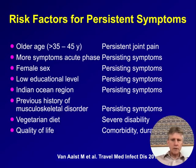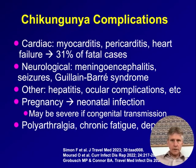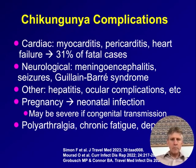Complications are rare but include myocarditis and pericarditis — less than approximately 0.2%, but potentially fatal. Meningoencephalitis and Guillain-Barré syndrome are also rare complications, along with other less common manifestations. Mother-to-child transmission in pregnancy has already been mentioned.